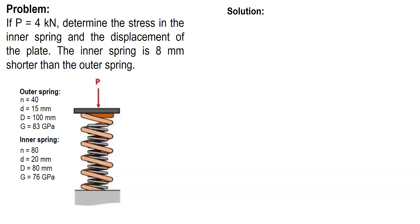Okay, in this video, I'm going to solve a sample problem on helical spring. Here's the problem. If P is equal to 4 kN, determine the stress in the inner spring and the displacement of the plate. The inner spring is 8 mm shorter than the outer spring.